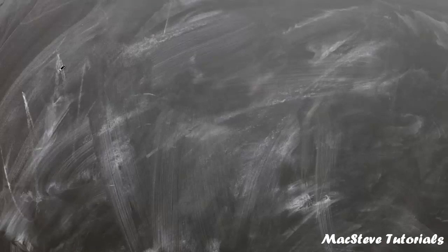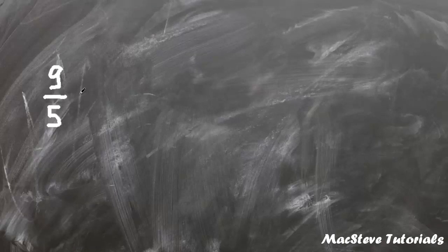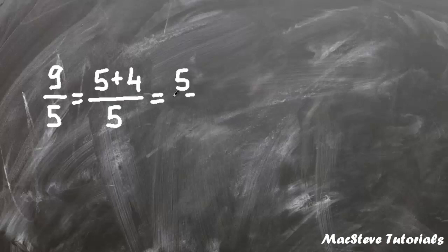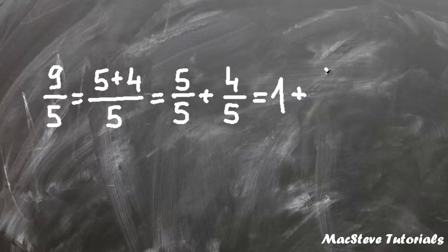In this example we will convert 9 fifths into mixed number. Now 9 fifths we can write as 5 plus 4 over 5. Now this is same as 5 over 5 plus 4 over 5. And this is 1 plus 4 fifths, which is same as 1 and 4 fifths.